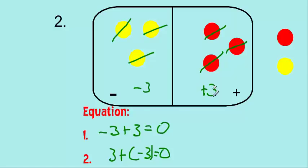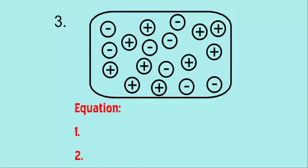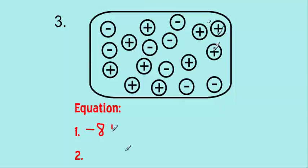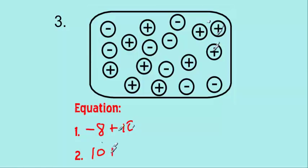Sample problem number three — we're going to look at some positives and negatives inside a box. We'll first build our equation and then cancel out. Counting the negatives first: one, two, three, four, five, six, seven, eight negatives — so our negative number is negative eight. Counting the positives: one, two, three, four, five, six, seven, eight, nine, ten. So the equation is negative eight plus ten. And the second equation using the commutative property is ten plus negative eight.